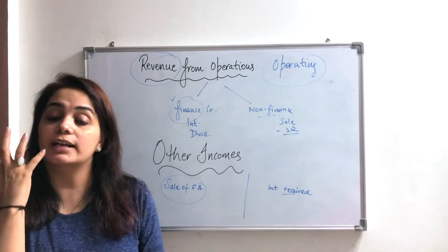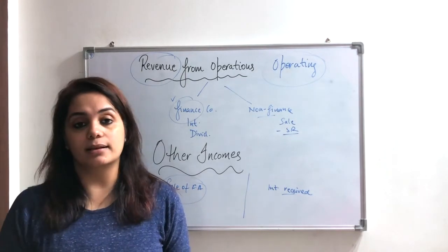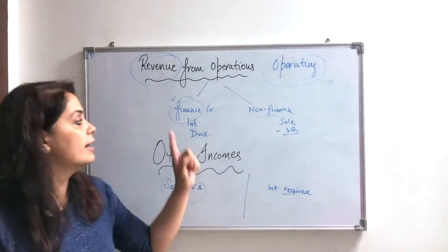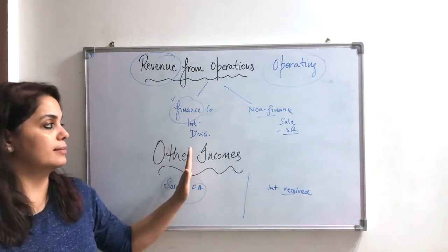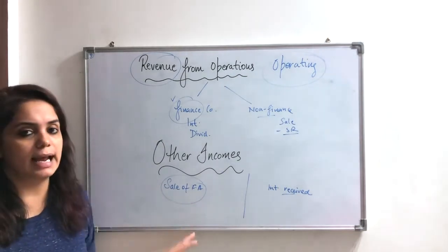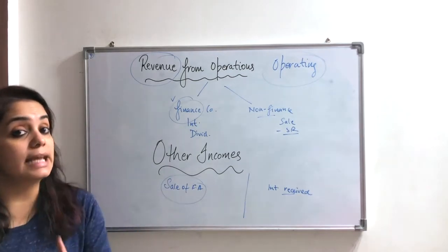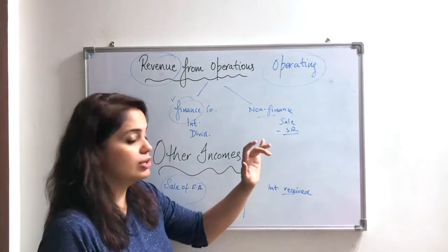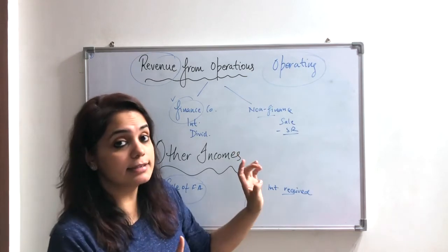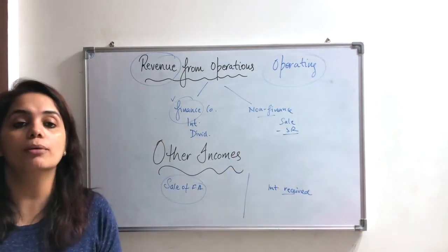For companies that provide finance, the interest received and dividends received are all revenue from operations. For other companies — non-finance — these would go under other incomes. Regarding sale of scrap: if sale of scrap is given for a manufacturing company or a trading company — meaning a non-finance company — then it will be classified as revenue from operations.